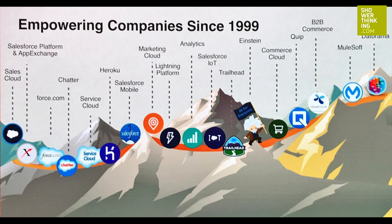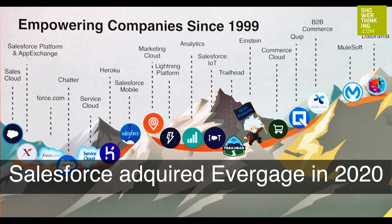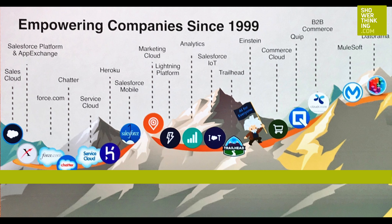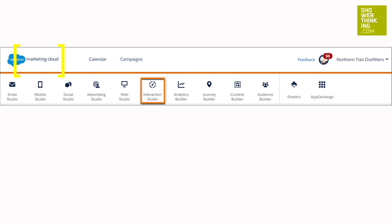Interaction Studio is one of Salesforce's most recent acquisitions. Salesforce acquired Evergates in 2022 and renamed it Interaction Studio. It is a solution that is part of the Salesforce Marketing Cloud, and it can be purchased as an add-on license and appears in the main Marketing Cloud menu.